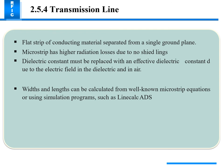A transmission line is a flat strip conducting material separated from a single ground plate. Microstrip has higher radiation losses due to no shielding. The dielectric constant must be replaced with an effective dielectric constant due to the electric field in both the dielectric and air. Width and length can be calculated from microstrip equations or using simulation programs such as Linescale or ADS.